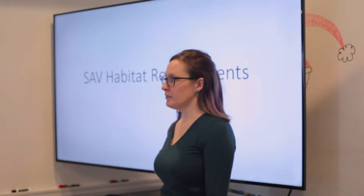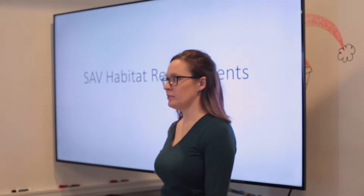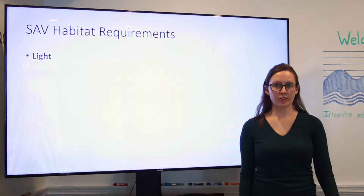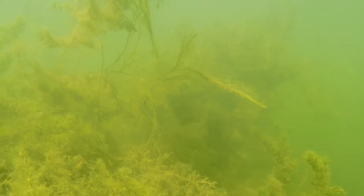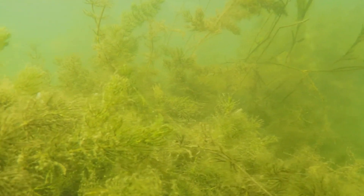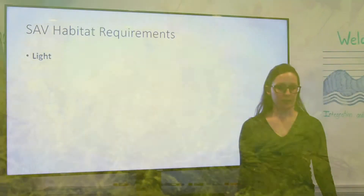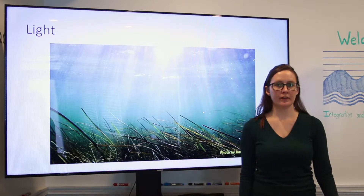Many factors related to habitat influence the distribution and survival of SAV. Like all plants, SAV need light in order to carry out photosynthesis, which is the process by which they produce the energy they need to grow and survive. Among plants, SAV have some of the highest light requirements, and for this reason they're usually found in shallow, clear waters.